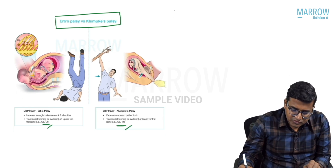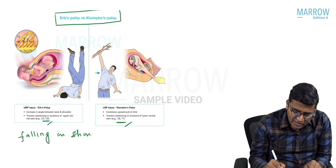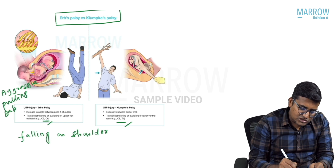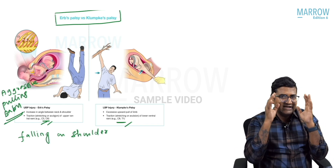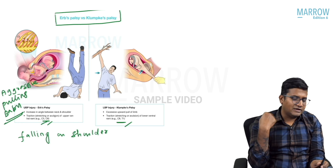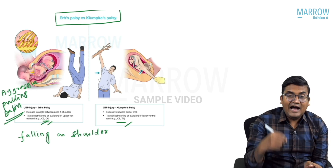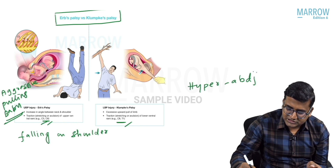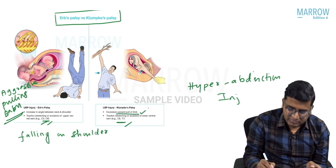Erb's palsy is due to falling on the shoulder, or aggressive pulling of the baby during labor, which damages the upper trunk. Whenever there is an increase in the angle between the neck and the shoulder, the patient will have Erb's palsy. Klumpke's palsy is due to a hyperabduction injury — excessive upward pull of the limb.